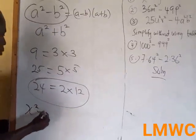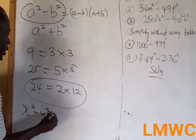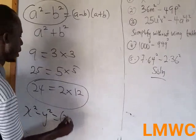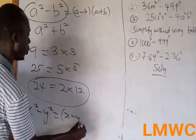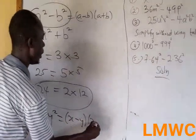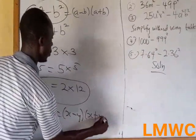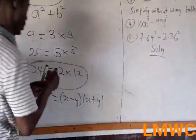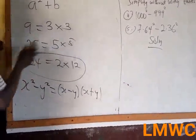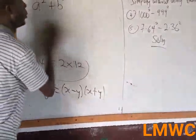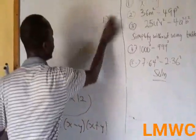So x squared minus y squared becomes (x minus y)(x plus y). This is the difference of two squares formula.